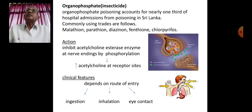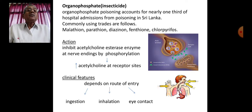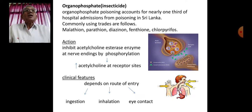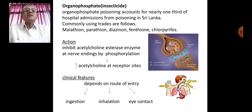The organophosphate compounds commonly involved in poisoning include malathion, parathion, diazinon, fenthion, and chlorpyrifos. Most of the time, patients are not well-read and may not be able to tell you exactly what they ingested. We ask them to bring the bottle if available so we can read what exactly has been consumed or the patient has been exposed to.